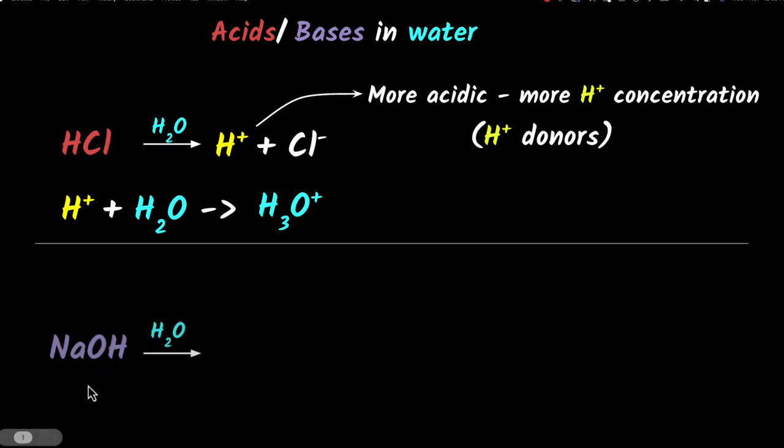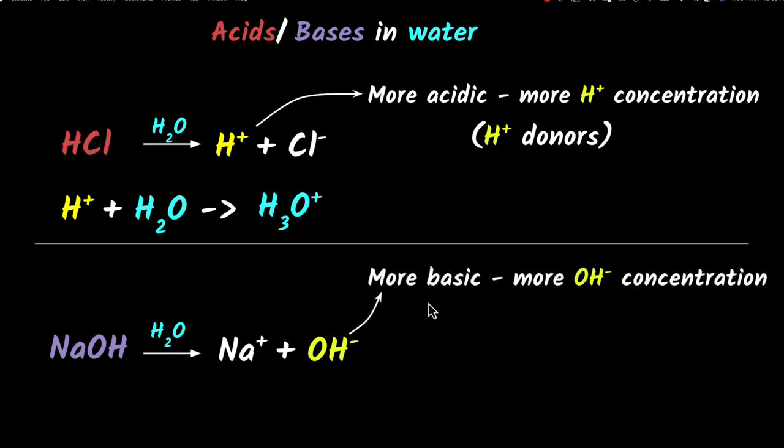What happens when you put a base in water, like sodium hydroxide? They will dissociate to give you sodium ions and OH- ions. Whenever you have more OH- ions in a solution, we say it is more basic. More OH- concentration means more basic.